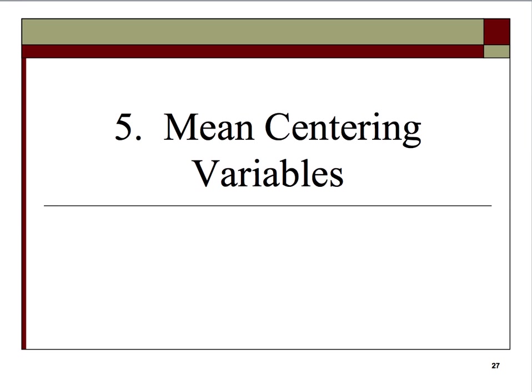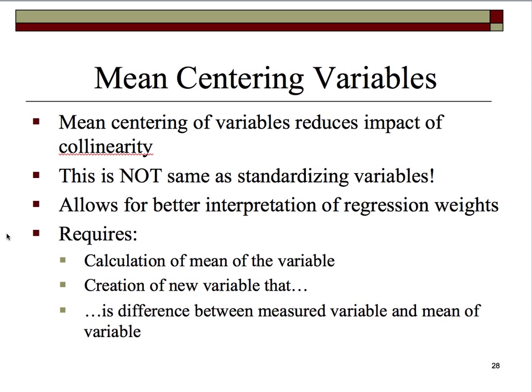We can't ascertain which is the strongest predictor of the DV, which is usually something we want multiple regression to answer. The significance levels will not change, but by making some adjustments — specifically mean centering — we can bring the beta weights back into range. Mean centering variables reduces the impact of collinearity. This is not the same thing as standardizing variables.